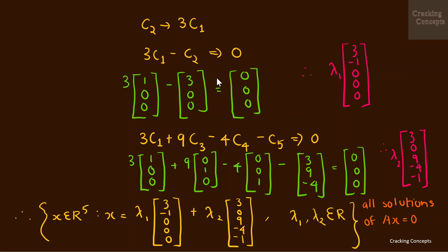We take the indices of columns present here, which are c1 and c2. The index values are 3 and minus 1. Since columns c3, c4, and c5 are not present, their indices are taken as 0. Hence we obtain the vector (3, -1, 0, 0, 0). Since any multiple of this vector is a solution to this set of linear equations, we multiply it with scalar lambda 1.